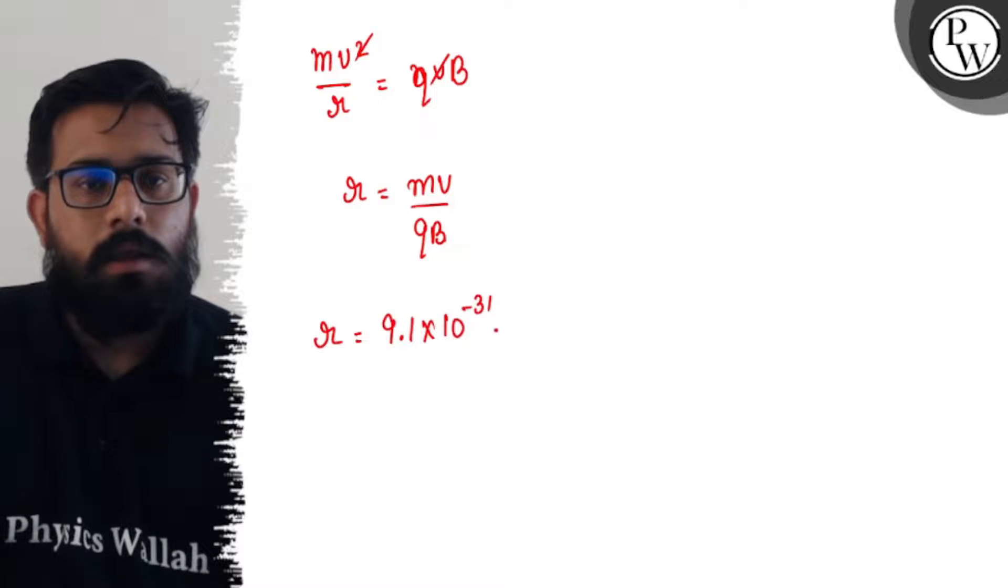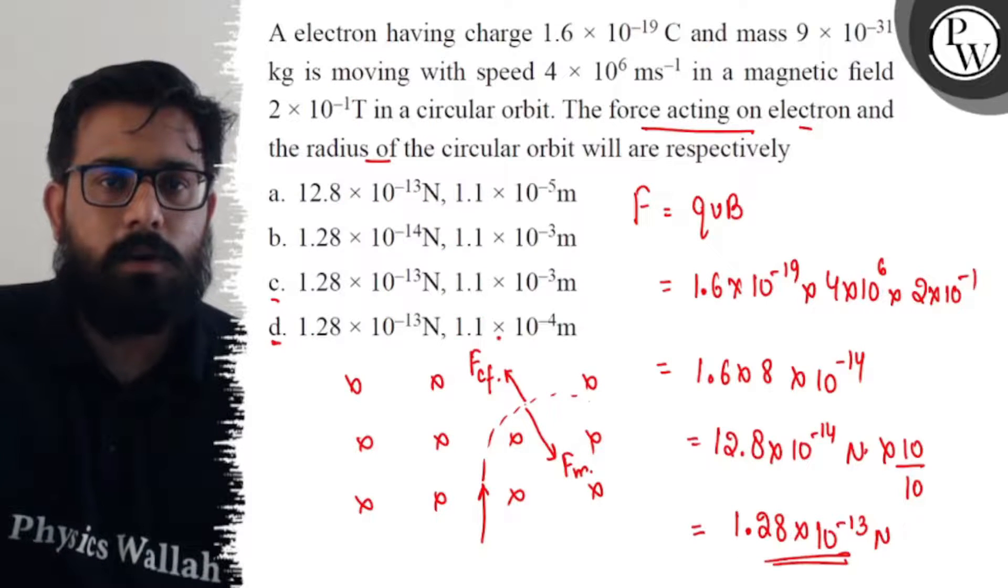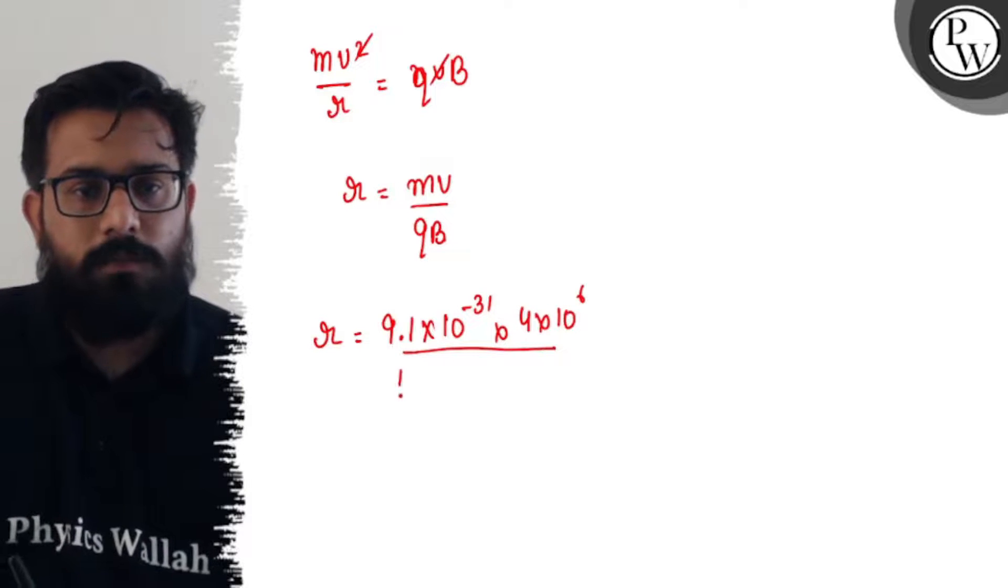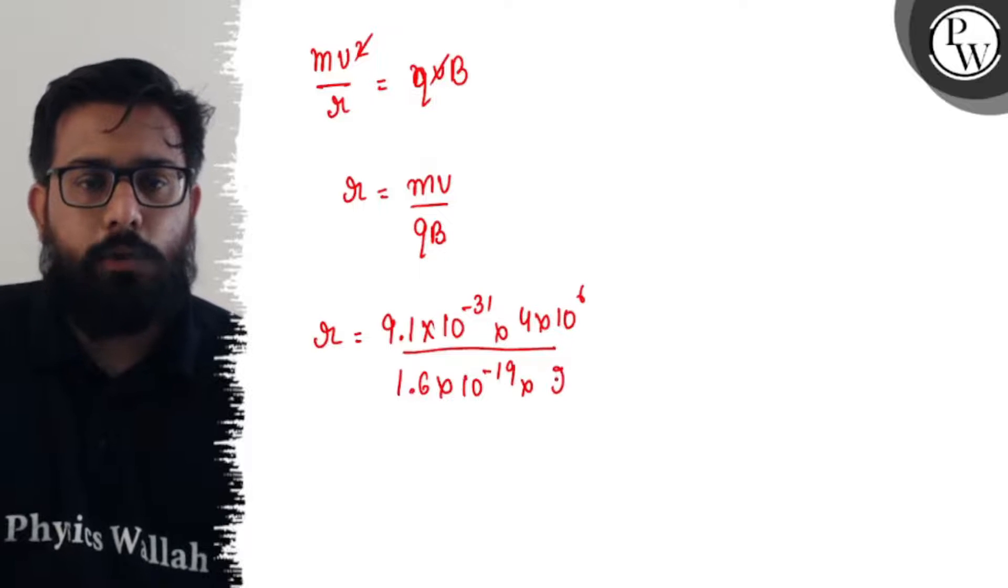Velocity is 4 × 10^6 upon charge of 1.6 × 10^-19 into B, 2 × 10^-1.